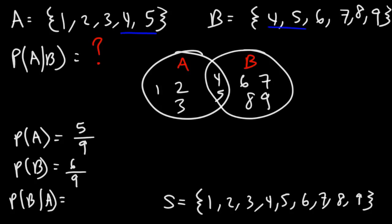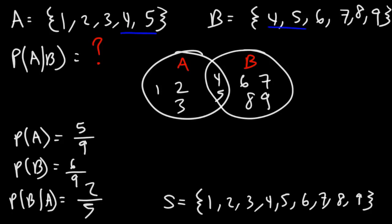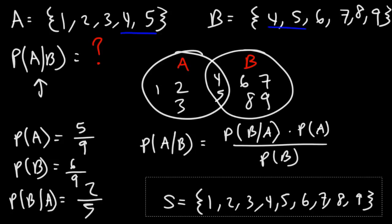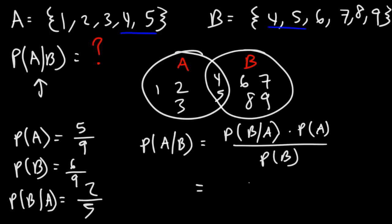There's a formula for that which we talked about earlier, but to think about it conceptually: how much of B is in A? A has 5 elements — the numbers 1 to 5. Out of those 5 numbers, there are only 2 numbers in B that are part of A. So the probability that B will occur given that event A has occurred is 2 out of 5. A has 5 out of 9 possible numbers, so P(A) = 5/9. B has 6 numbers out of 9, so P(B) = 6/9.